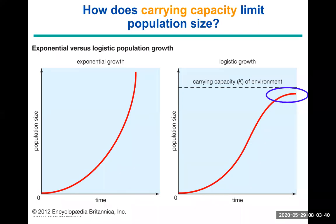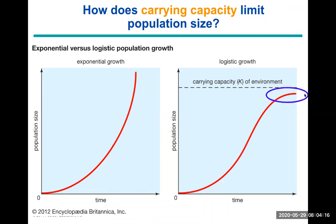Sexual reproduction requires finding a mate, and overpopulation and crowding lead to increased disease and competition, making survival more challenging. Carrying capacity eventually caps a population's size at a level where individuals can be sustained but resources are not completely depleted. Exponential growth has significant negative impacts on the environment and on the population itself.